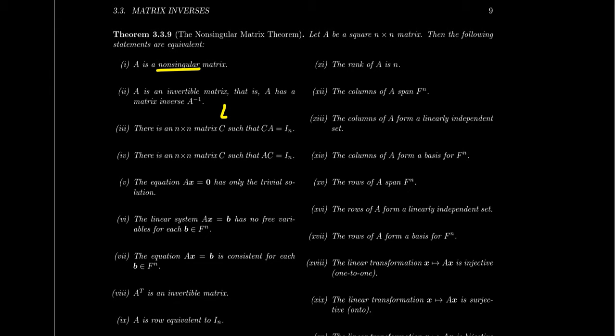Condition 4 talks about right inverses: there exists a matrix which, when multiplied on A from the right, gives you the identity. So if you have a one-sided inverse, that's actually equivalent to having a two-sided inverse — a regular inverse. When we check whether two matrices are inverses of each other, you only have to check one side. You don't have to do both multiplications, because it'll always turn out to be the case with a square matrix.